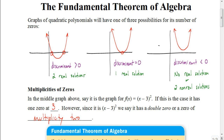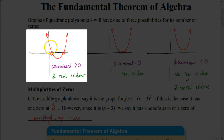Recall that a quadratic, if we were to graph it, there's one of three scenarios that can come up. The first scenario is where the quadratic has two x-intercepts, and that would mean that there would be two real solutions. We can determine that without having to graph it by looking at the discriminant. The discriminant is the portion underneath the square root in the quadratic formula. If that portion is greater than zero, we know there are two real solutions.